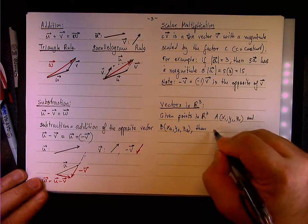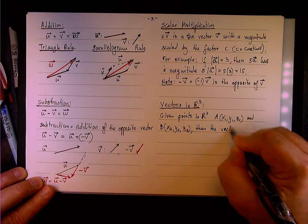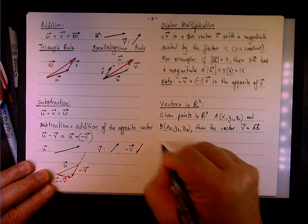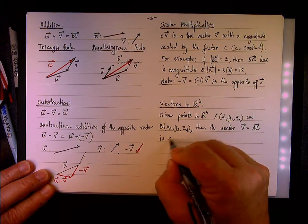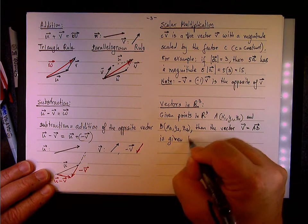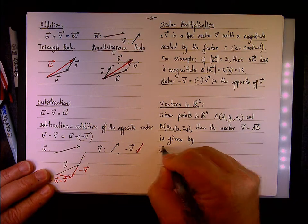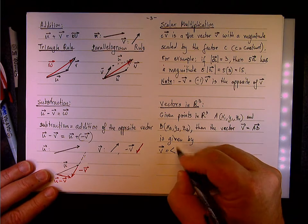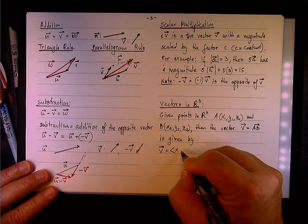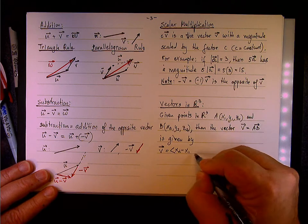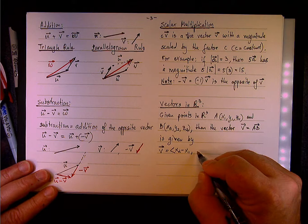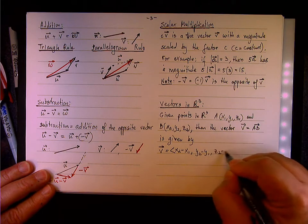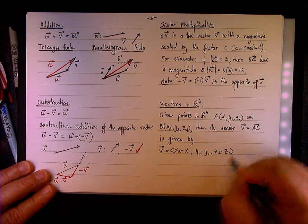Then the vector V equals the vector AB from A to B is given by, if we use this notation, it would be the difference in the x values in the x coordinates, so it would be the quantity (x₂ - x₁), and then the y component would be (y₂ - y₁), and the z component would be (z₂ - z₁).